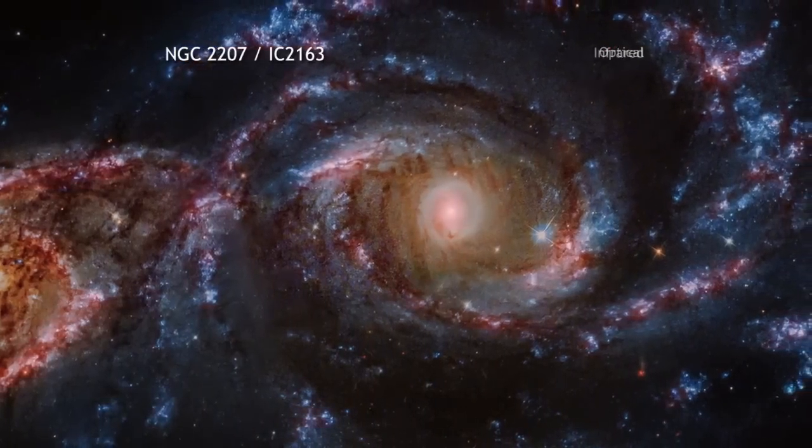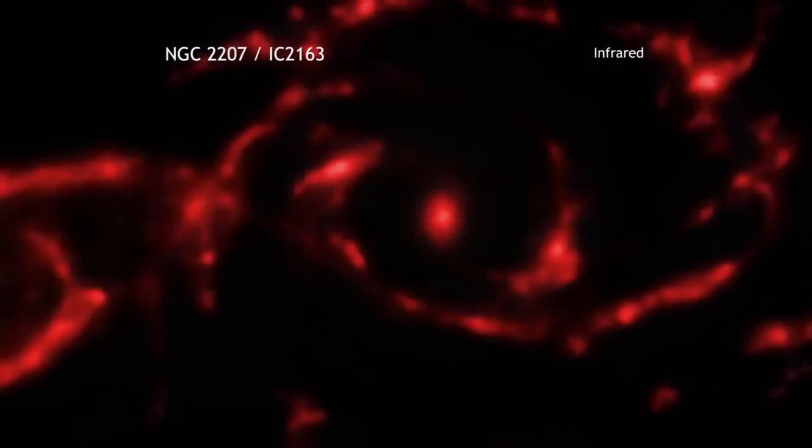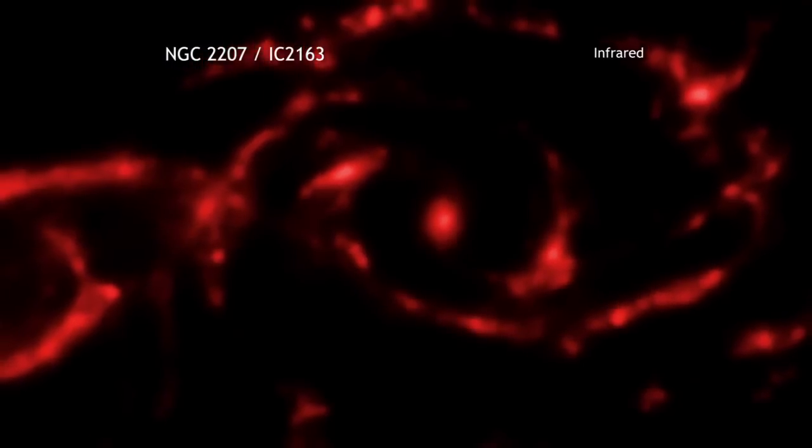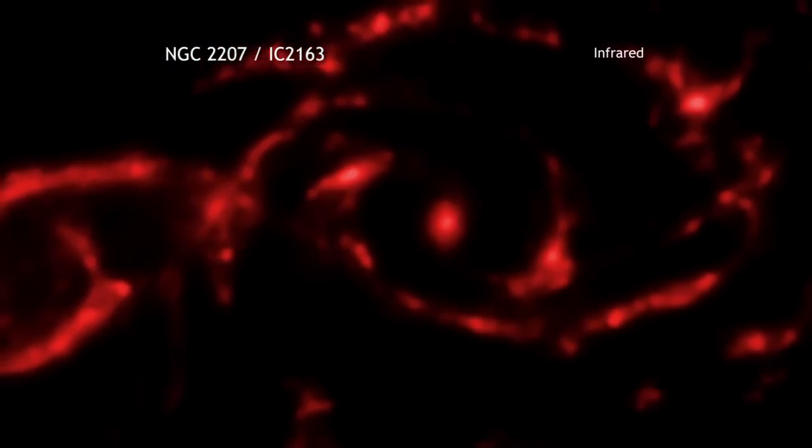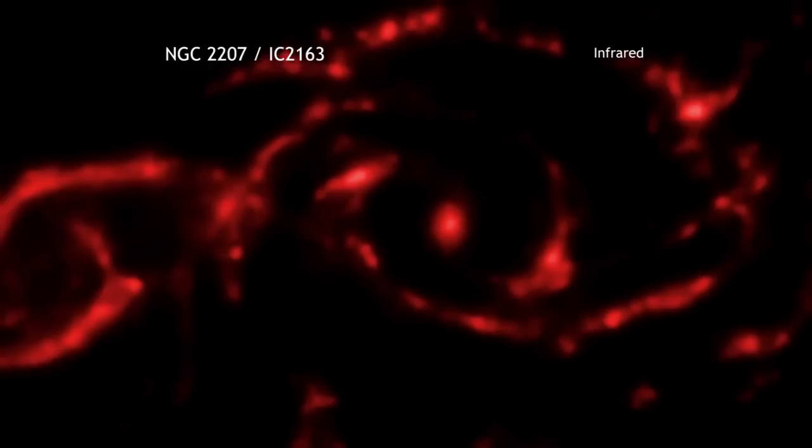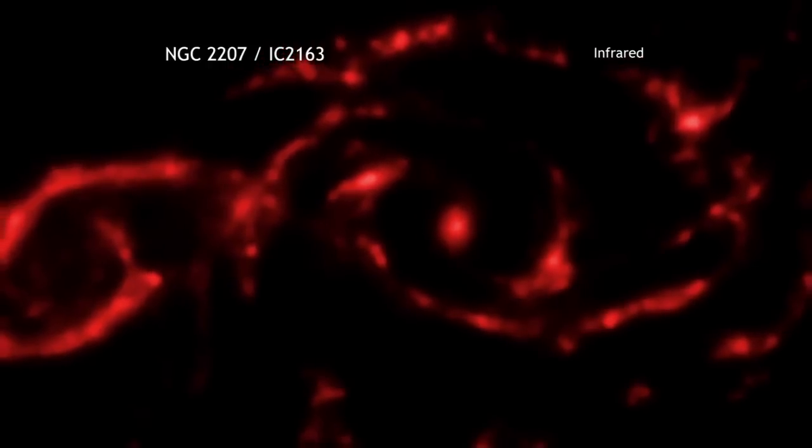The strong gravity of the neutron star or black hole pulls matter from the companion star. As this matter falls toward the neutron star or black hole, it is heated to millions of degrees and generates X-rays.